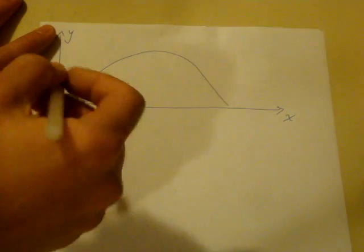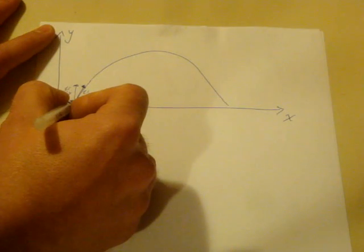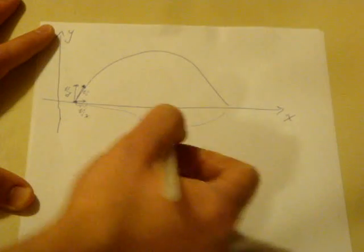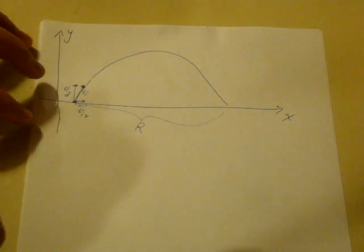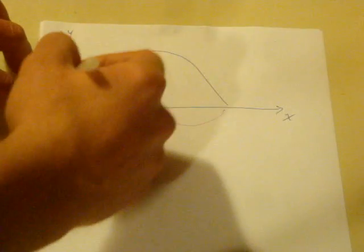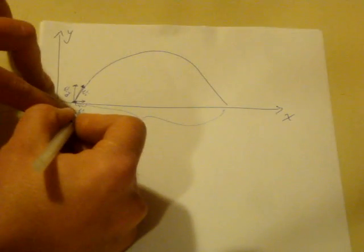So the first part that we want to know is something about the range, the maximum range that this object is going to travel. It's really just some distance, and your book calls it capital R to be the range. If we want to know the range, how will we find that out?